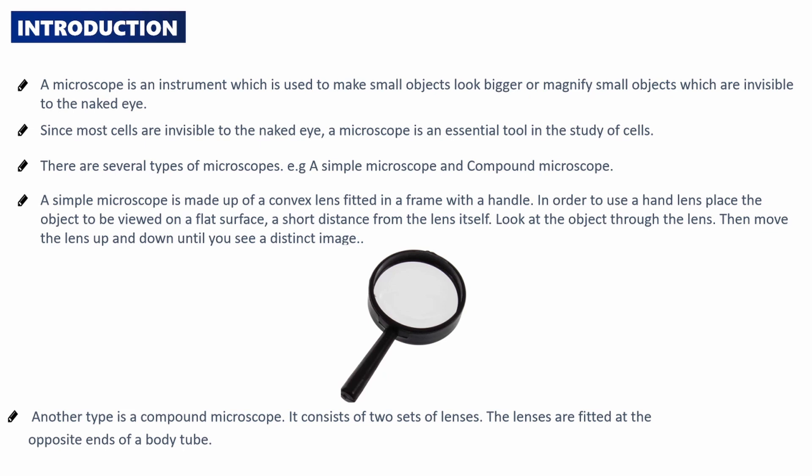Another type of microscope is the compound microscope. It consists of two sets of lenses. The lenses are fitted at the opposite ends of the body tube. Let's look at the compound microscope in depth.